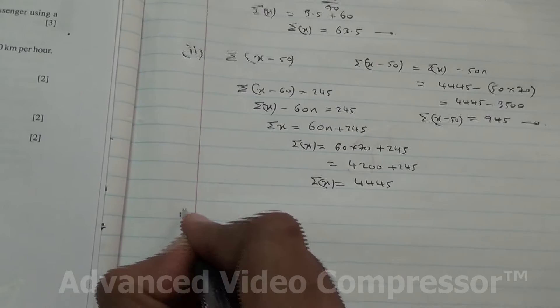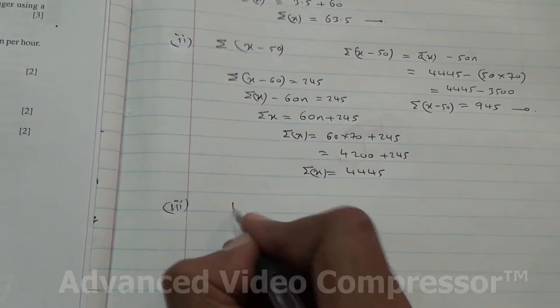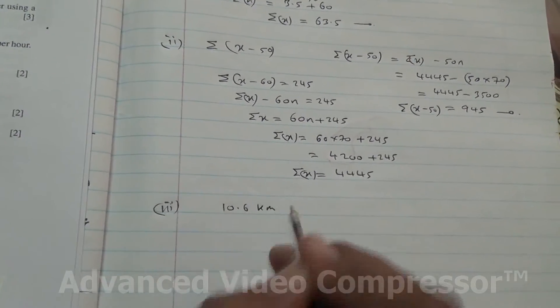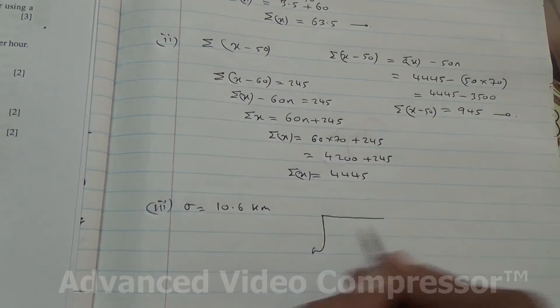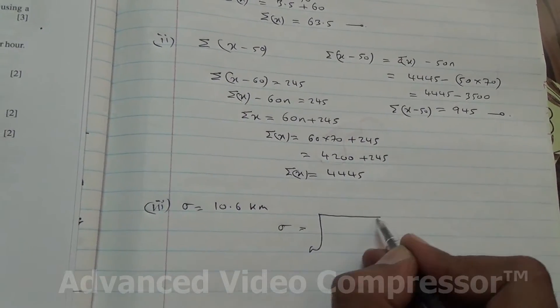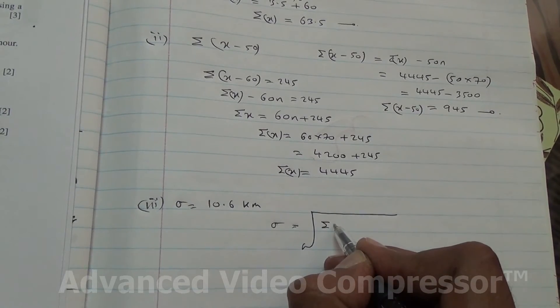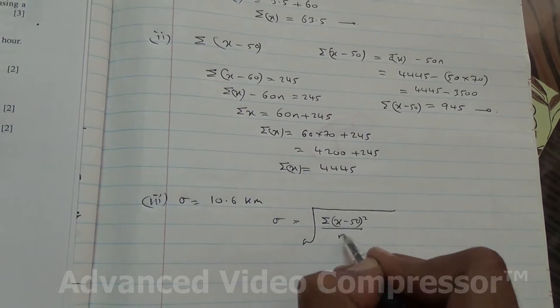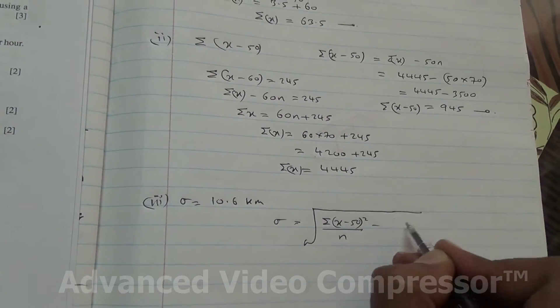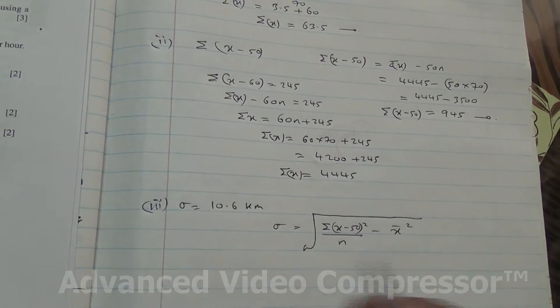Now, we're told that the standard deviation was given, and that the standard deviation is 10.6 kilometers per hour. That's our standard deviation. What's the formula for standard deviation? Standard deviation's formula is going to be summation of x minus 50 squared, because we need to find this one, divided by n minus the mean squared.